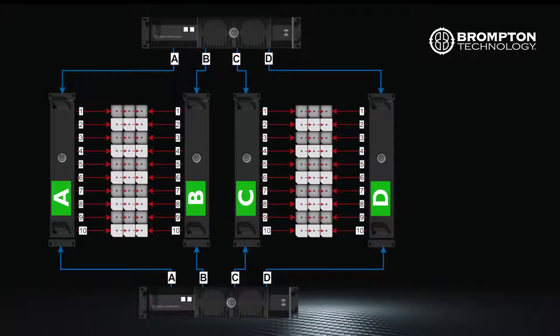Closed loop redundancy also works in this configuration. However, the cabling is slightly different as you can see in the picture. Trunk A links to your first XD which then links to your panels, and this then connects to trunk A on your second processor. The same goes for trunks B, C and D.